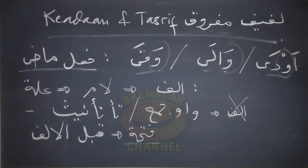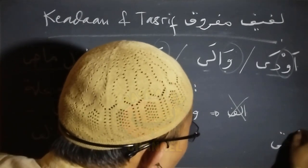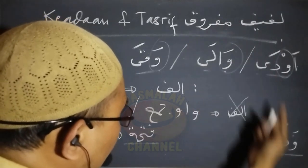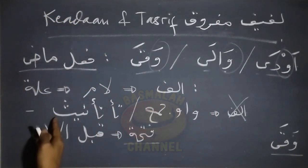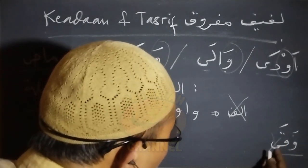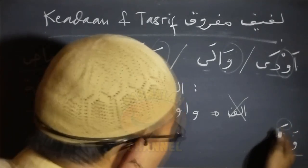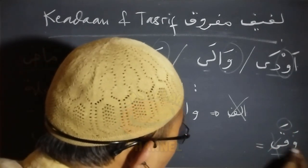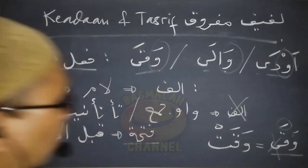Ketentuan yang pertama adalah manakala bersambung dengan ta' ta'nis atau juga bersambung dengan waw jamah, maka dalam hal ini huruf ilat yang berupa alif di sini dibuang. Sementara harkat daripada huruf qablal alif, yaitu huruf yang terletak sebelum alif, ini diberi harkat fatha. Hal ini dilakukan dalam rangka untuk menunjukkan bahwa setelahnya harkat fatha di sini terdapat huruf ilat alif yang dibuang. Kita ambil contoh seperti lafad wakaw.